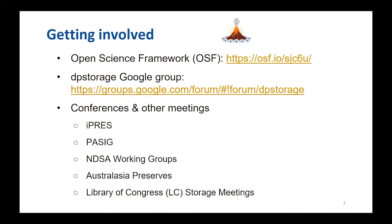Another way people find the criteria useful is in talking to their own management — when they say they need special storage for digital preservation and management asks what that means. People have found the criteria useful just for having a conversation, not as a full list of requirements. It's also a way of helping eliminate things that are lower priority. The intent is to provide a list of things to take a subset from when talking to management.